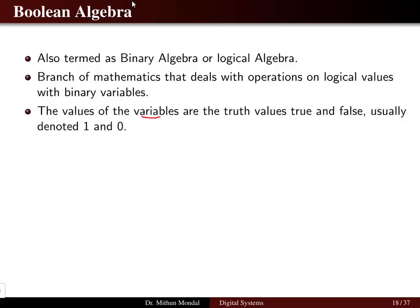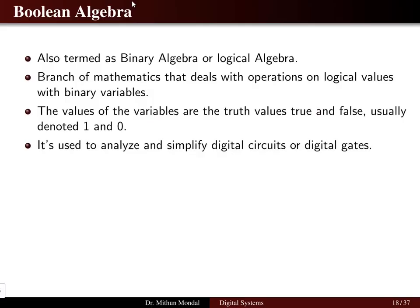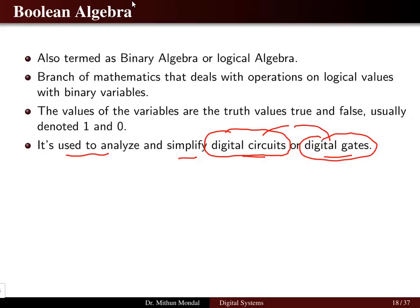The values of the variables in a truth table are true or false. True indicates one and false indicates zero, denoted by one and zero. These are the only two digits used in binary mathematics or Boolean algebra. It is used to analyze and simplify digital circuits or digital gates, using only two numbers — one and zero — to represent the logical values true and false.